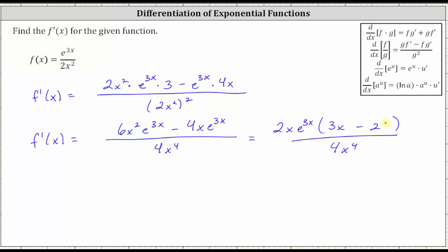Now that we've factored the numerator, we can see there's a common factor of 2 between the numerator and denominator, as well as a factor of x. Simplifying the 2 and the 4 — the 2 simplifies to 1, the 4 simplifies to 2. And when we simplify out the common factor of x, the x in the numerator simplifies to 1, and the x to the fourth in the denominator simplifies to x cubed. So our final simplified derivative is equal to e to the power of 3x times the quantity 3x minus 2, all divided by 2x cubed.